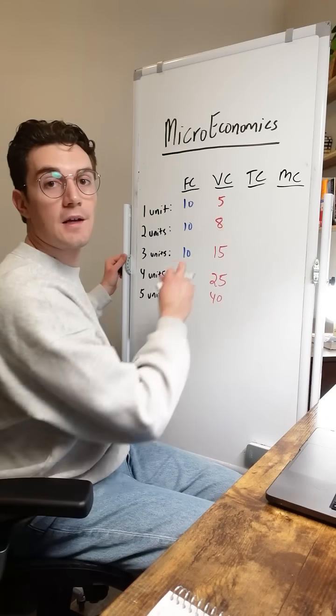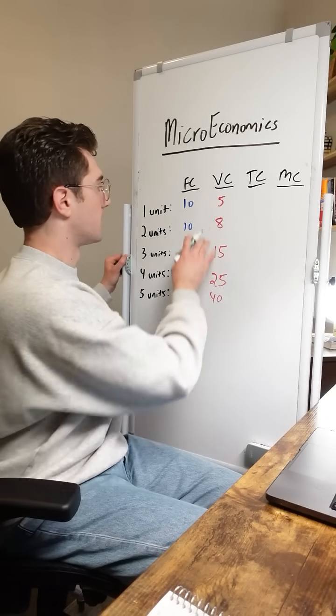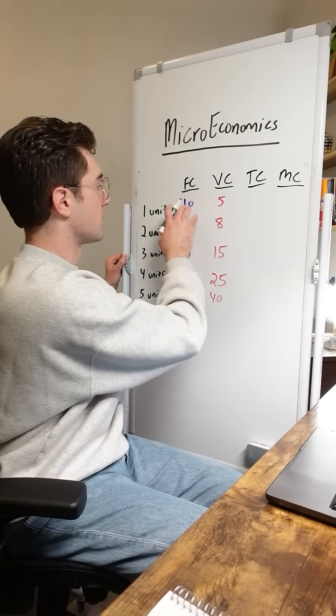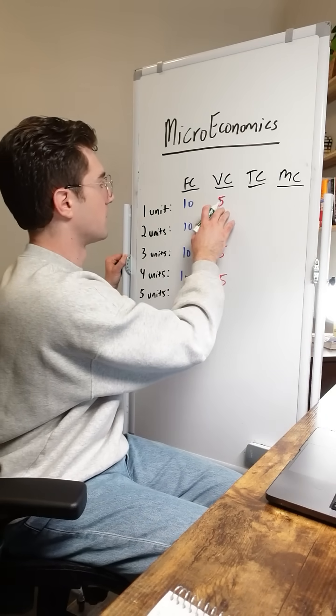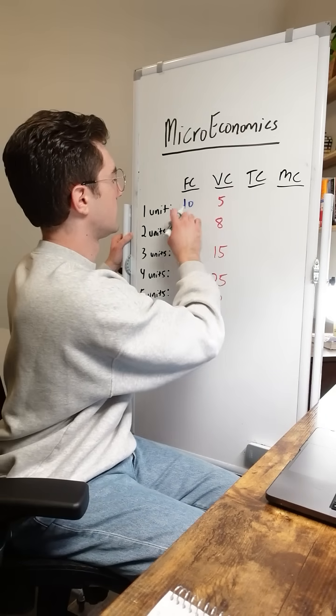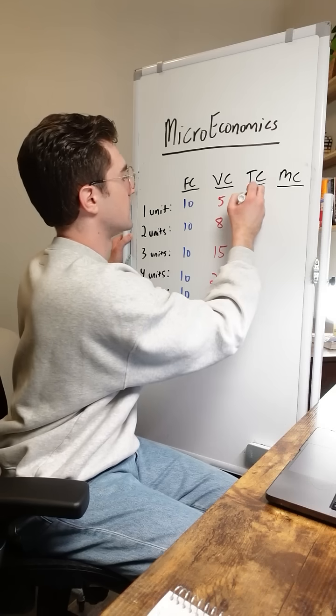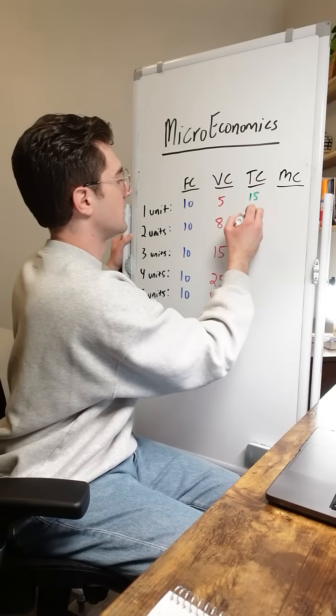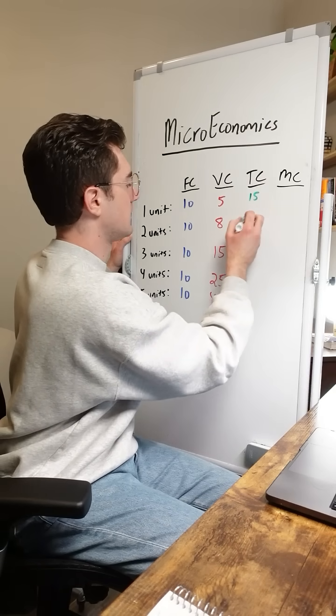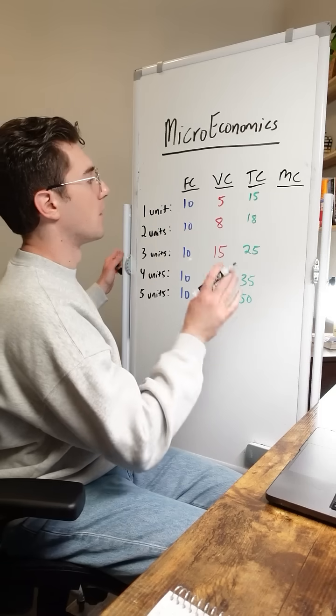Total cost is super simple — we're just adding together the fixed and variable cost. So 10 plus 5 is 15, 10 plus 8 is 18, et cetera.